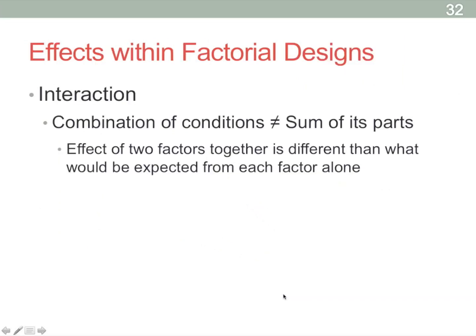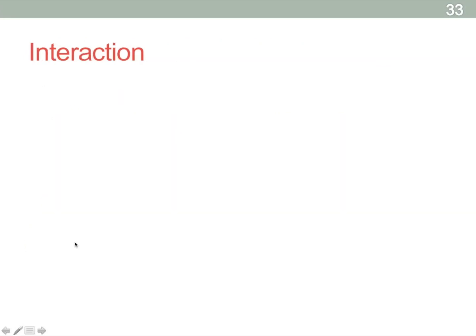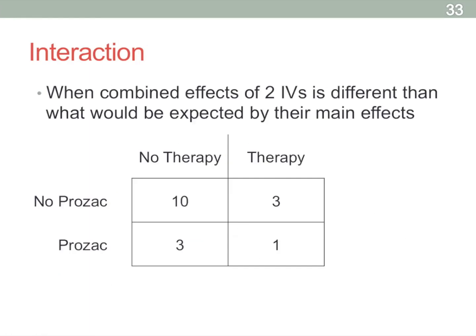We can look for an interaction. An interaction is when the combination of conditions is not equal to the sum of its parts — in other words, you're getting a very different effect than you'd expect from the additive effects of therapy plus Prozac. When you combine them, you're getting something actually a little different than what you'd expect.